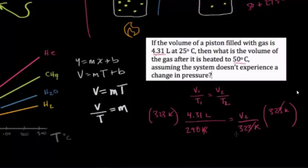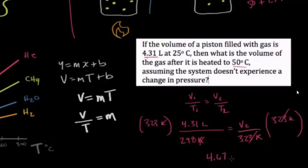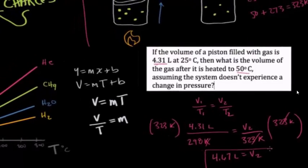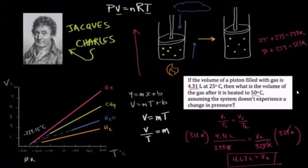And that's going to give us a final volume of 4.67 liters. And so thanks to Jacques Charlet, we know that if we're looking at a closed system under constant pressure, then we can predict the change in volume related to the change in temperature, or vice versa.